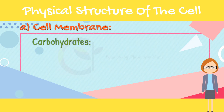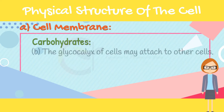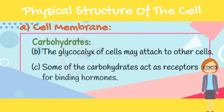The carbohydrates on the outer surface of the cell have multiple functions. They are often negatively charged and therefore repel other negatively charged molecules. The glycocalyx of cells may attach to other cells, allowing cells to attach to each other. Some of the carbohydrates also act as receptors for binding hormones.